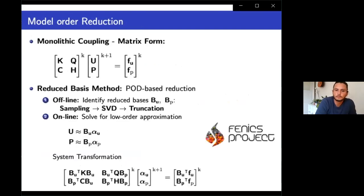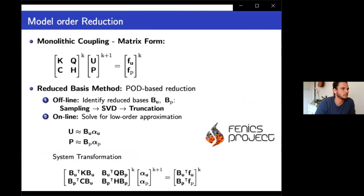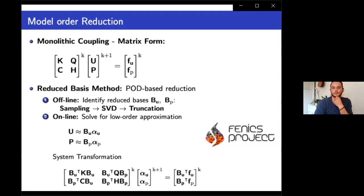The finite element model for solving these coupled equations was initially developed using FEniCS, an open source platform for finite element modeling. The system was solved using a monolithic approach for the coupling. Then, the reduced order model was created using the reduced basis method, which is a POD-based method for model reduction. It is performed in two steps: the offline stage, where the manifold of possible solutions for different inputs is sampled and processed to identify a low-order space, and the online phase, where a much smaller system of equations is solved to acquire any solution corresponding to an input in the sampled domain.